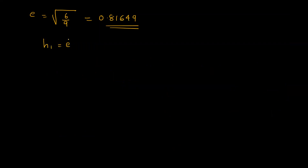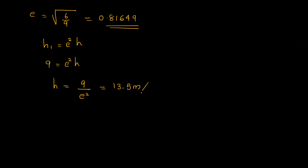From the first bounce relation, h1 is equal to e squared times h. So 9 is equal to e squared times h. Therefore, h is equal to 9 divided by e squared, which equals 13.5 meters.